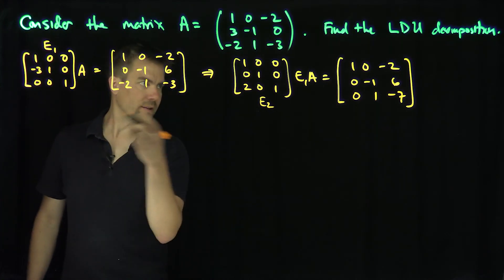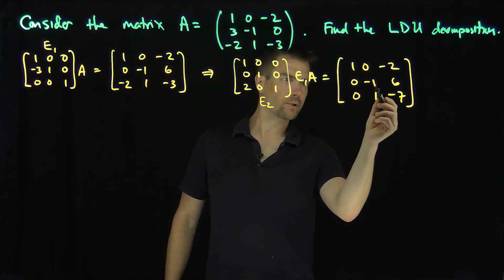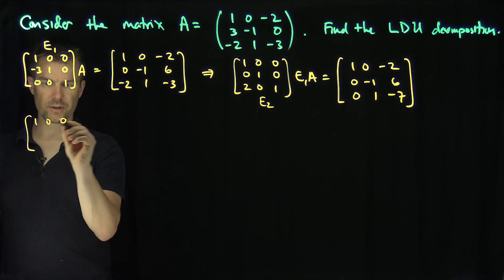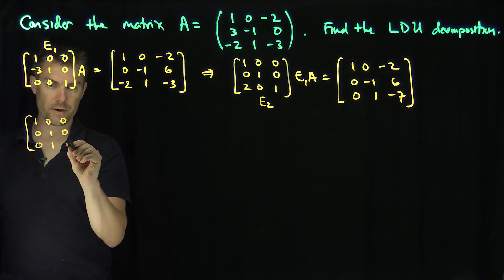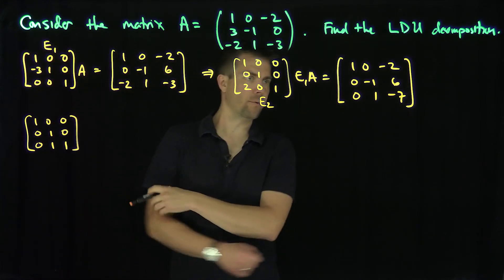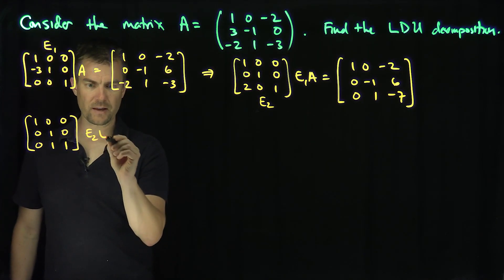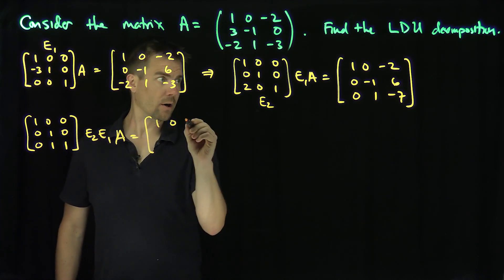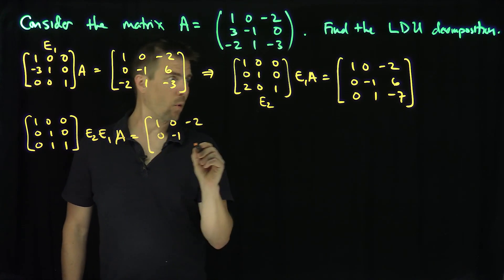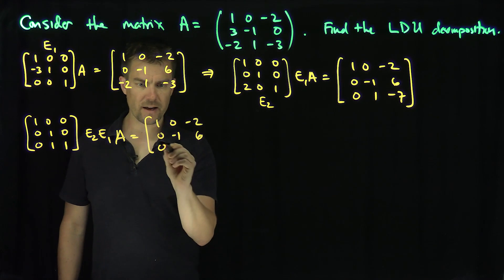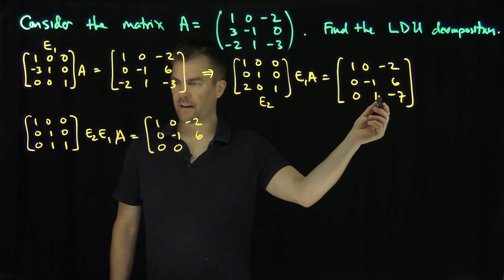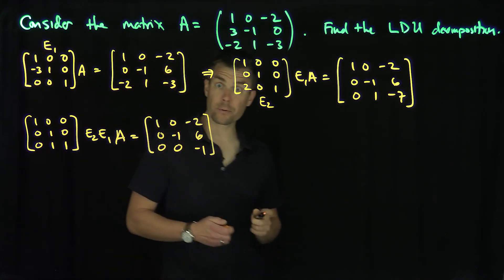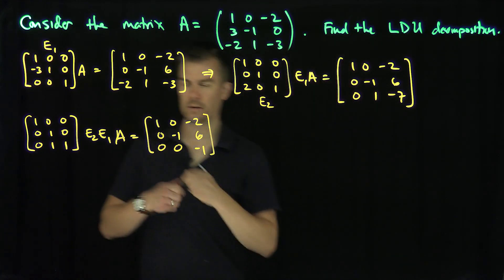The last operation is 1 times row 2 plus row 3, using the elementary matrix: 1, 0, 0, 0, 1, 0, 0, 1, 1. Applied to E2E1A this gives: 1, 0, negative 2, 0, negative 1, 6, and finally 0, 0, and 6 plus negative 7 equals negative 1. This is now an upper triangular matrix — I'll call this U tilde.